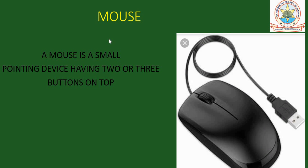The second input device is mouse. A mouse is a small pointing device having two or three buttons on its top. If you don't use a keyboard, you can use a mouse.